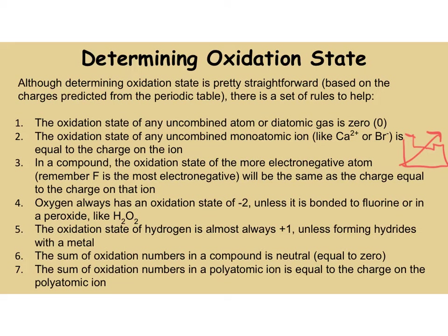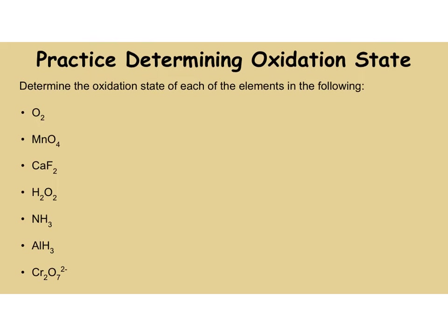We'll do a couple examples. The first one is O₂. We go to rule number one — is this an uncombined atom or diatomic gas? It is a diatomic gas, so the oxidation state is zero. For MnO₄, this is a compound. Oxygen is more electronegative, so O is minus 2. There are 4 oxygens, which means Mn has to be plus 8 for the compound to be neutral. So Mn is plus 8.